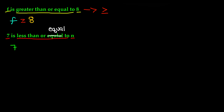For greater than or equal to, the symbol was a greater than mark with a line underneath it. This is the same thing, except you use a less than mark — so the mouth is open towards the right — and then a small line underneath it. That is the symbol for less than or equal to. So we bring the symbol over, less than or equal to, and then the variable n. This means the value of n is going to be greater than or equal to 7, because reading it backwards, 7 is less than or equal to n means n is greater than or equal to 7.